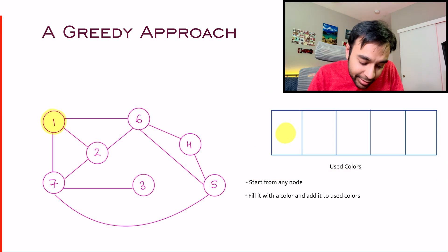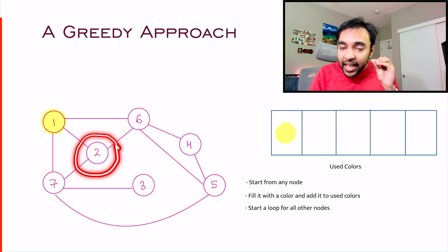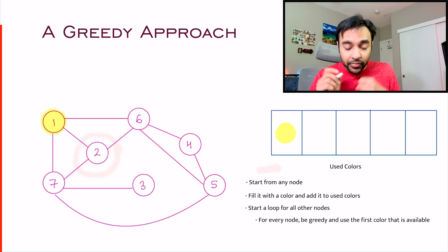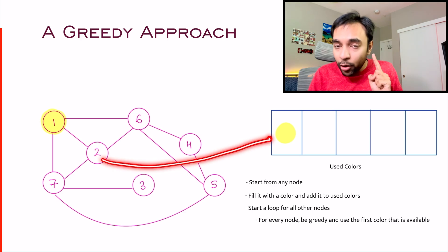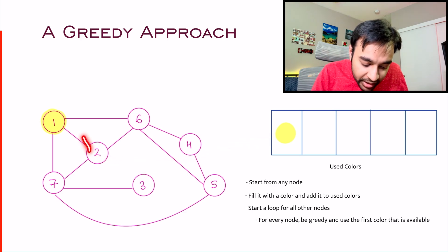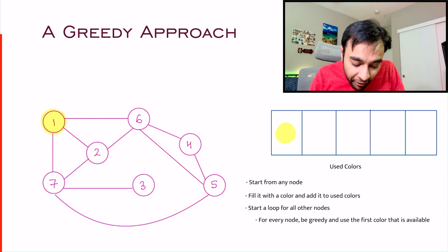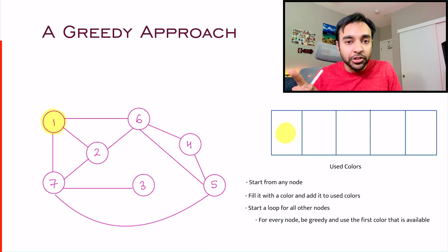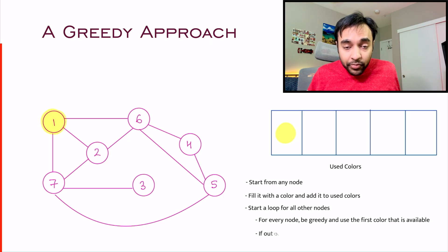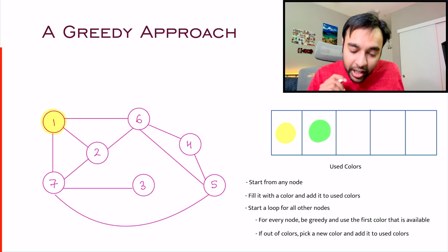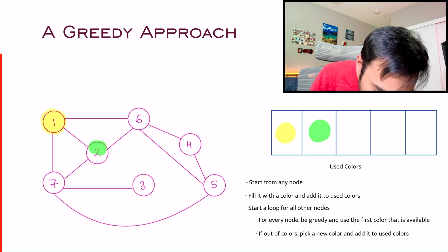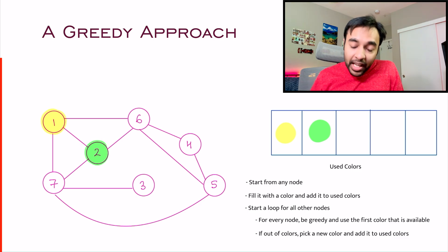Now, to move ahead, let us look at node number 2. If I am at any node, then by the greedy approach, you need to find out any color that you can use starting from the first color. Can I use yellow in node number 2? No, because yellow is directly connected to this particular node. So yellow is not possible. I am out of colors right now, so I will take up another color in my array — that means I have two colors now. I will color this node with the color green.